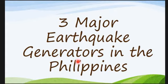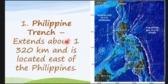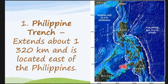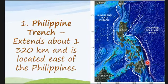We have three major earthquake generators in the Philippines. First is the Philippine Trench — it extends about 1,320 kilometers and is located east of the Philippines, on the right side of our map.